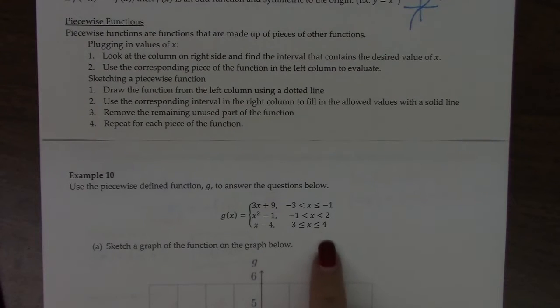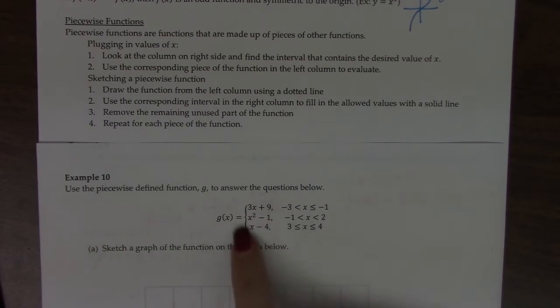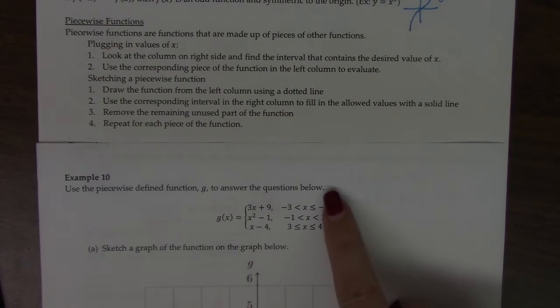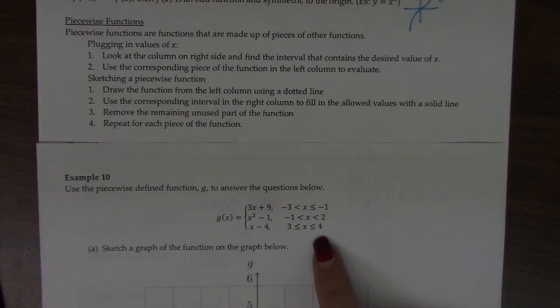piecewise functions are made up of multiple pieces, but they're structured with two columns. The equation is in the first column, and then the domain or the intervals of where that equation is valid is in the second column.